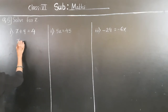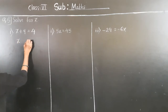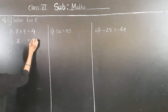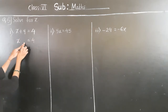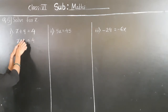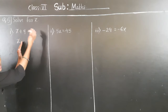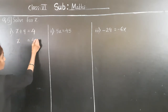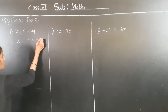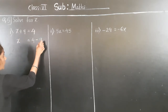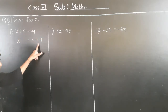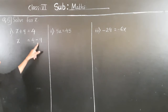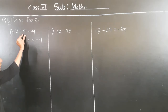So write here x is equal to — write this 4 as it is, don't write 9 again here because we are going to transfer it to the right hand side. So 4 minus 9. Why minus? Because 9 is here plus on the left hand side.